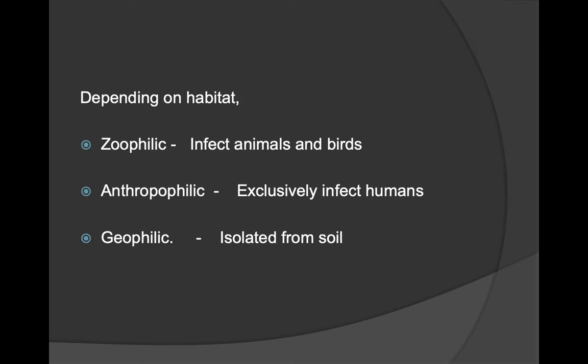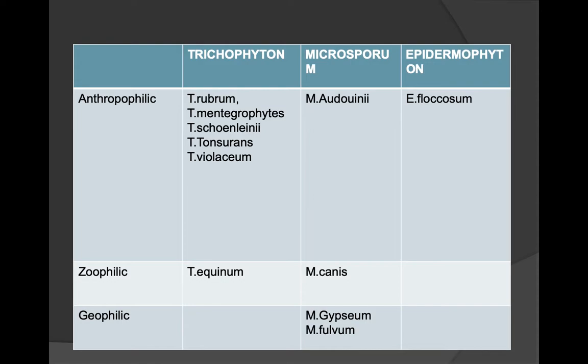Depending on their habitat, dermatophytes are divided into: zoophilic (infects animals and birds), anthropophilic (infects exclusively humans), and geophilic (isolated from soil). Anthropophilic species include Trichophyton rubrum, T. mentagrophytes, T. schoenleinii, T. tonsurans, T. violaceum, Microsporum audouinii, and Epidermophyton floccosum. Zoophilic species include T. equinum and M. canis; geophilic include M. gypseum.